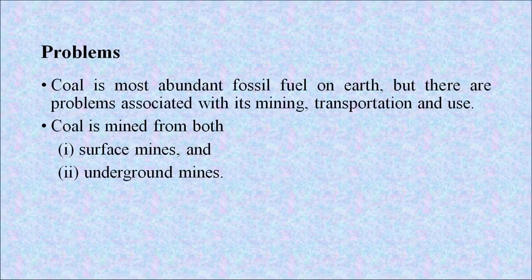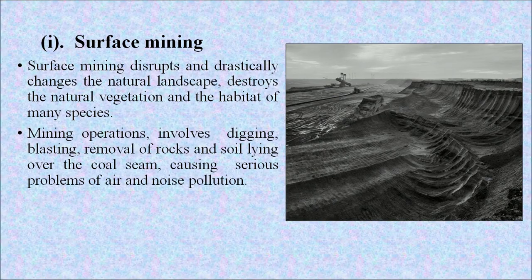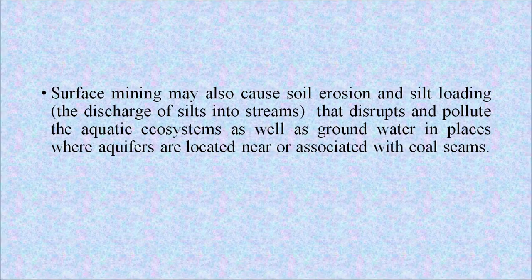Coal is the most abundant fossil fuel on earth, but there are problems associated with its mining, transportation and use. Coal is mined from both surface mines and underground mines. Surface mining disrupts and drastically changes the natural landscape, destroying natural vegetation and the habitat of many species. Mining operations involve digging, blasting, and removal of rocks and soil overlying the coal seam, causing serious air and noise pollution. Surface mining may also cause soil erosion and silt loading that disrupts and pollutes aquatic ecosystems as well as groundwater in places where aquifers are located near coal seams.